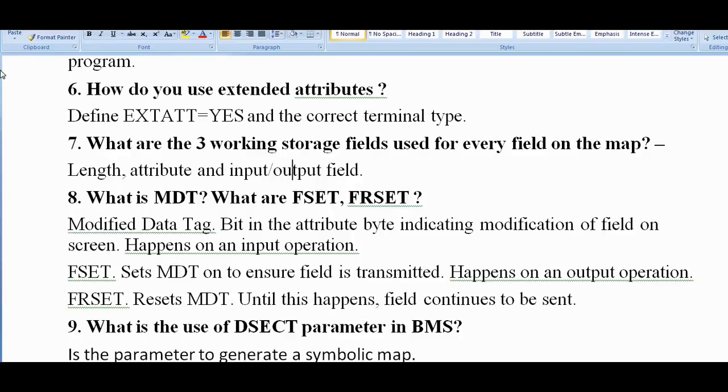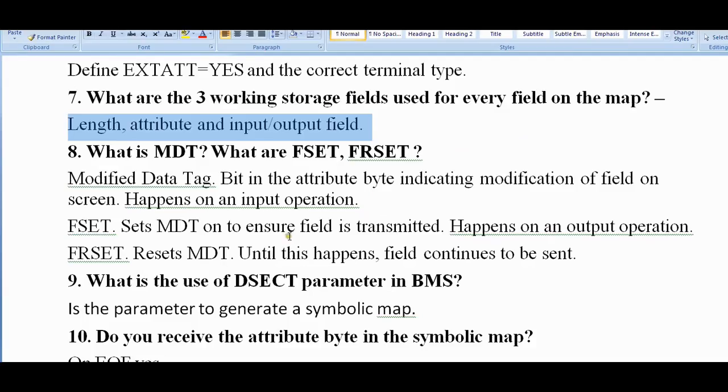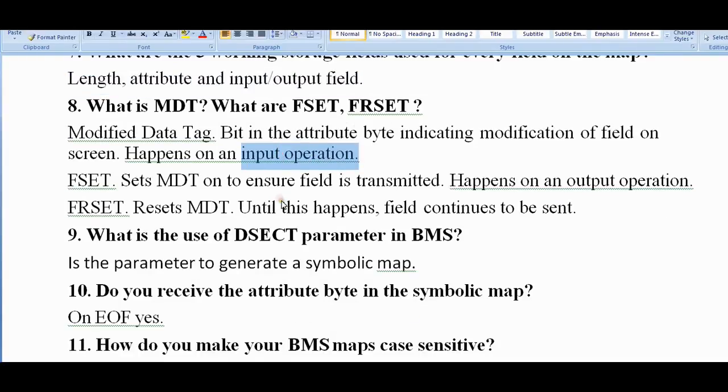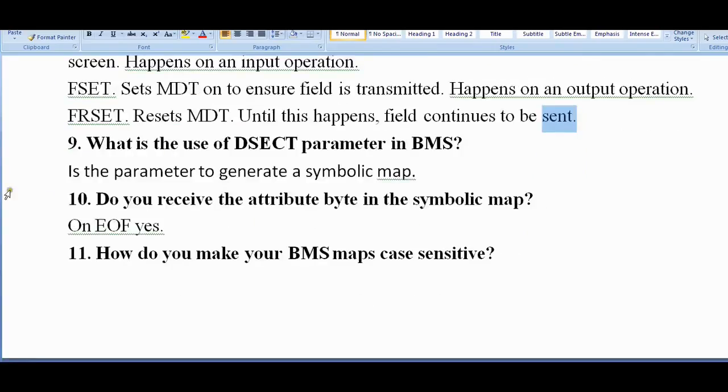What is MDT? What are FSET and FRSET? MDT stands for Modified Data Tag, a bit in the attribute byte indicating modification of a field on screen. Happens on an input operation. FSET sets MDT on to ensure field is transmitted - happens on an output operation. FRSET resets MDT. Until this happens, field continues to be sent.